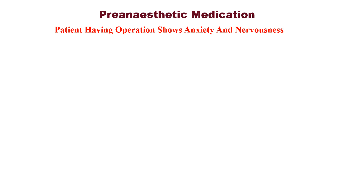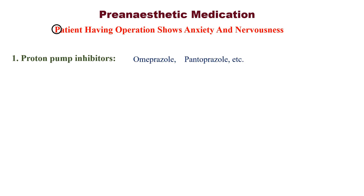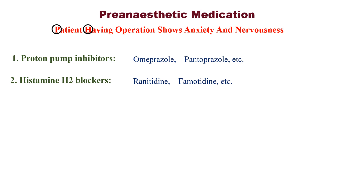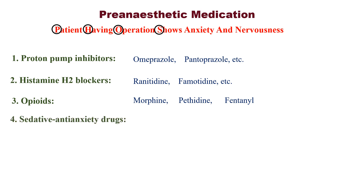So we are giving pre-anesthetic medication: P for proton pump inhibitors — examples: omeprazole, pantoprazole, etc. H for histamine H2 blockers — examples: ranitidine, famotidine, etc. O for opioids — morphine, pethidine, fentanyl, etc. S for sedative anti-anxiety drugs — examples: diazepam, lorazepam, etc.